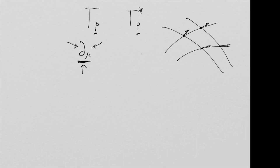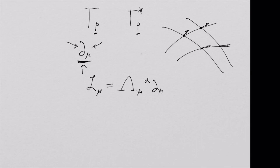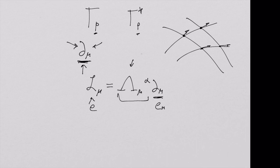I could have chosen four differential operators, call them L-mu, written in some matrix form times del-mu. This is the old basis, this is the transformation matrix from a previous lecture, and this is the new basis—it's the same simple transformation we did before, where this was e-alpha and this is e-hat-mu. There's nothing stopping us from doing that, and in fact in intermediate general relativity this is the basis of the subject we call frame fields.